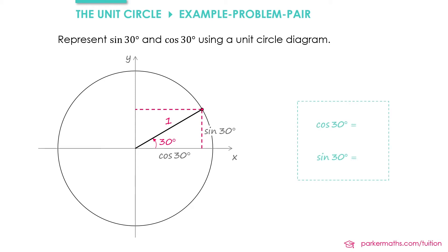Let's think about the values of cos 30° and sin 30°. We looked at these earlier when considering specific exact values and we found that cos 30° was √3/2 and sin 30° was 1/2. So the point on our circle has x coordinate √3/2 and y coordinate 1/2. This is what we mean by representing it on a unit circle.